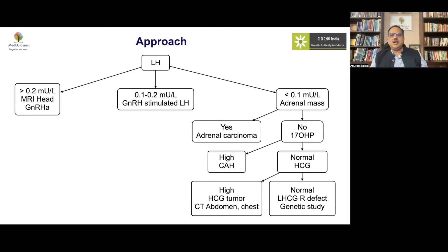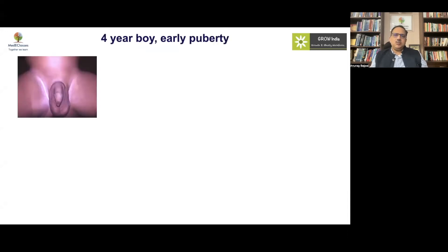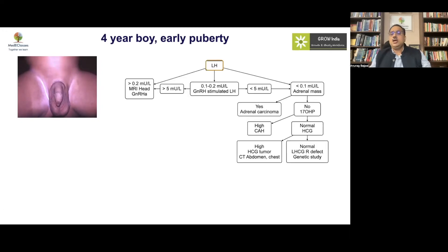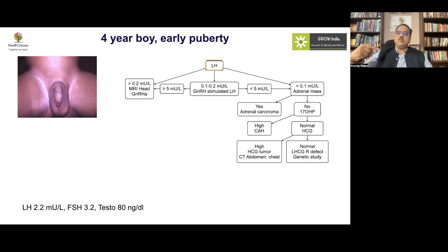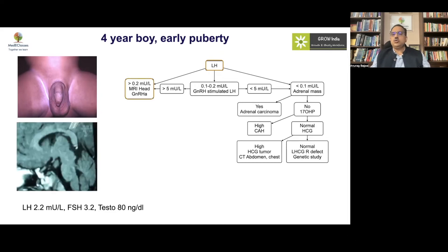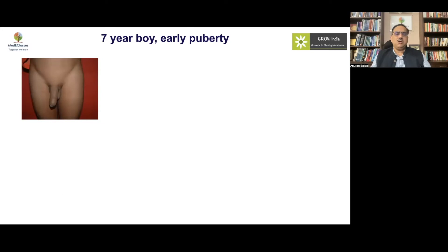If LH is at an intermediate level, a GnRH-stimulated LH level can be performed — above 5 mIU/mL suggests a central cause, below 5 suggests peripheral. In practice: a four-year-old boy with early puberty and pubertal testicular enlargement had high LH levels and elevated testosterone, pointing to a central cause. MRI revealed a hypothalamic hamartoma — a benign condition requiring no surgical referral, manageable with a GnRH analog.